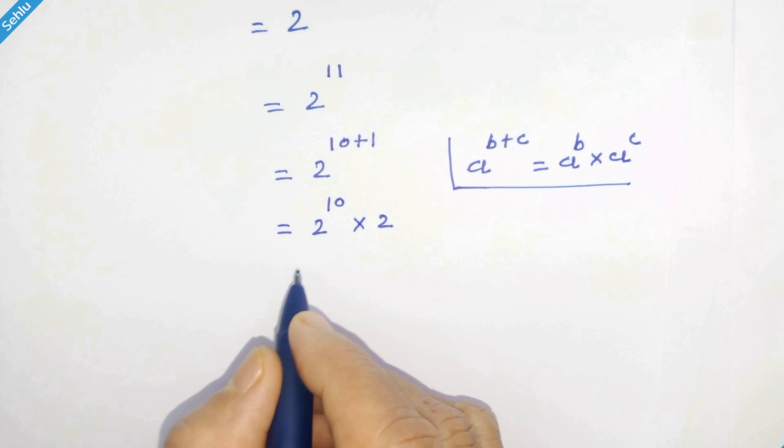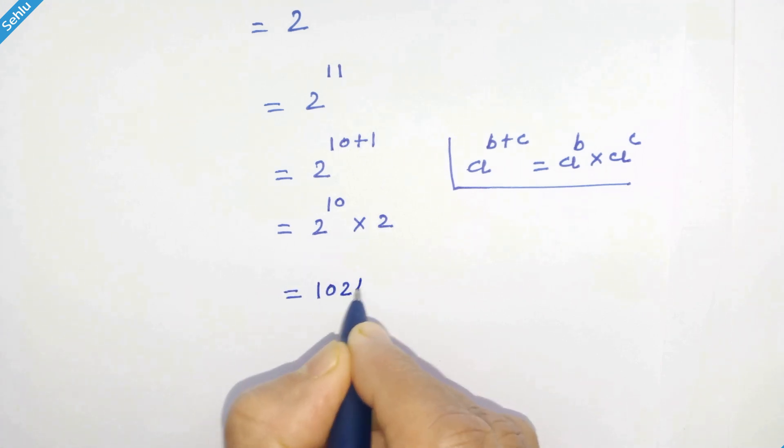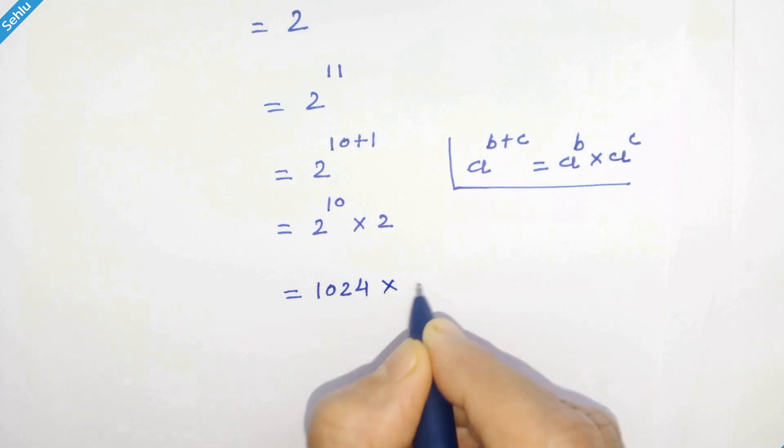You may know that 2 raised to 10 is 1024. 1024 times 2, and 1024 times 2 is